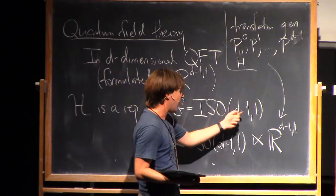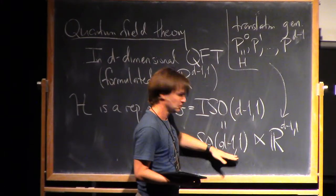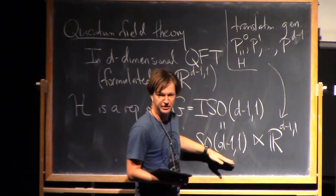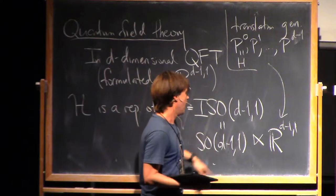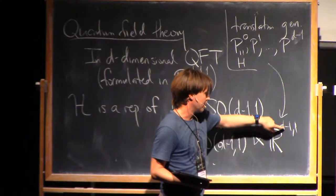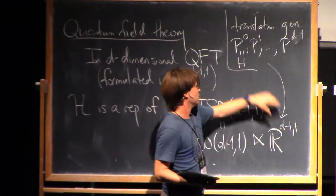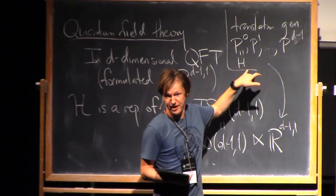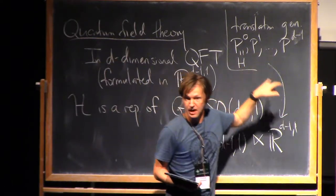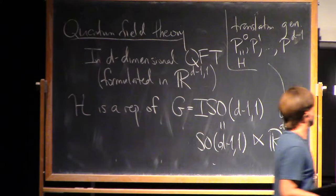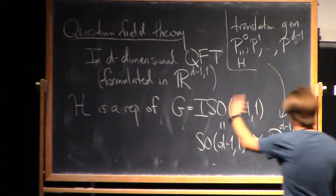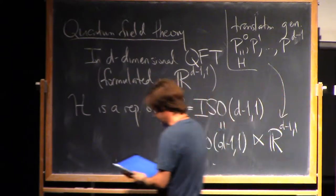The case we talked about before was the case of ISO(0,1), where the SO part was trivial, and we just had R to the 1 with a single generator, H. So now we're doing some jazzed-up version of that.